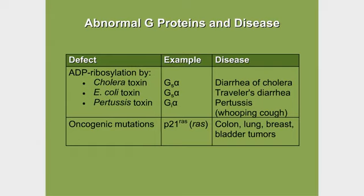when these toxins are secreted and come into a human cell, what they're going to do is carry out something called ADP ribosylation of a class of proteins called G proteins.